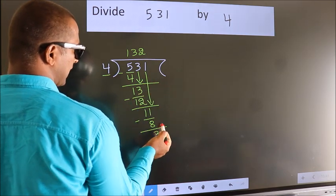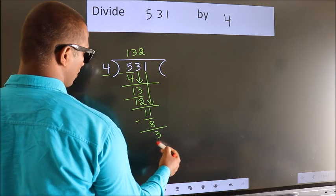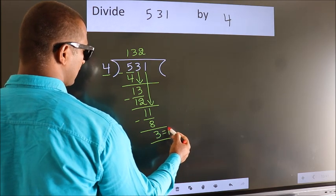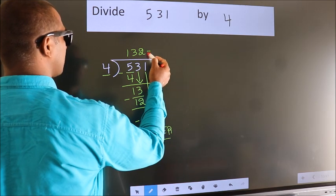No more numbers to bring it down. So, we stop here. This is our remainder. This is our quotient.